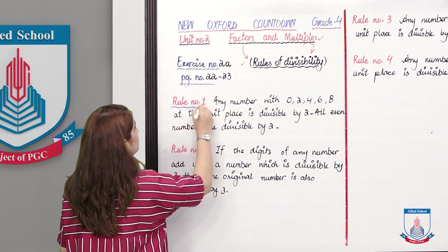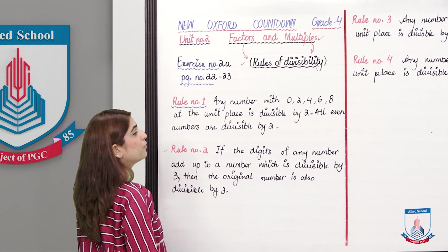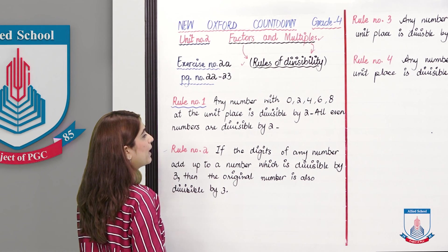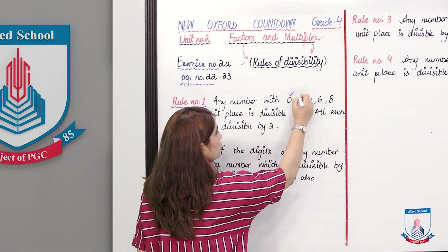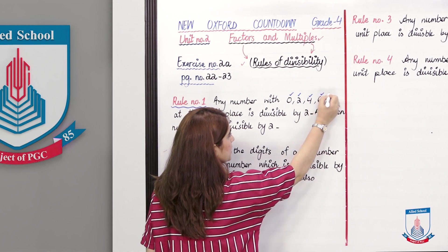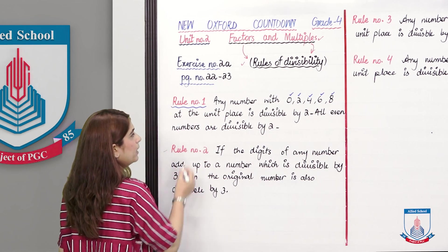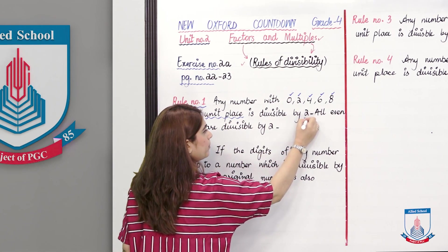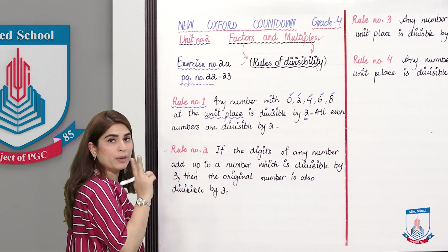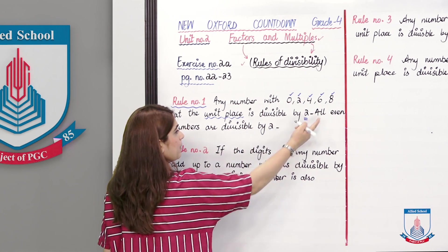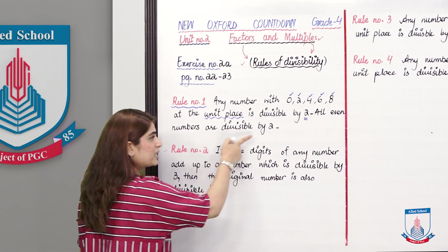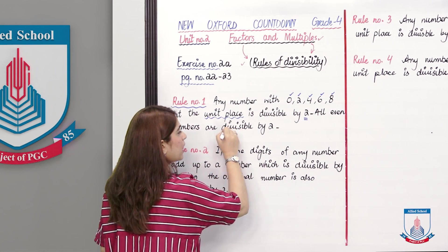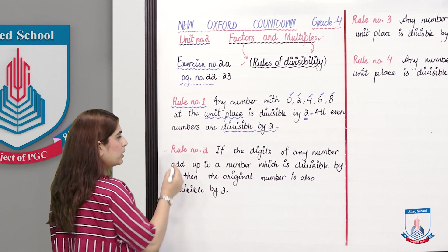Rule No. 1: Any number with 0, 2, 4, 6, or 8 at the unit place is divisible by 2. So any even number is divisible by 2. All even numbers can be divided by 2.